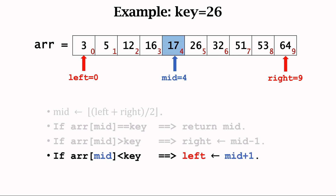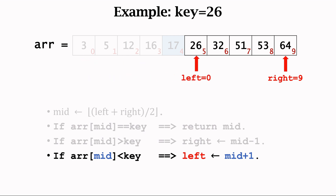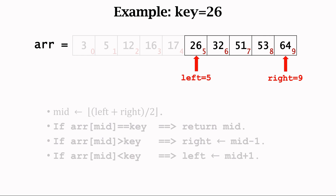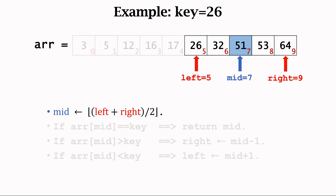Let's compare 17 and the key. The key is 26. The key is greater than 17, so the key 26 should be on the right side of mid. We will search for the key in the right half. Let the left pointer point to the position of mid plus 1. Now the left pointer is 5. We know the key is somewhere between the left pointer and the right pointer. Let's recompute mid — take the average of the left and right pointers. The average of 5 and 9 is 7, so let the mid pointer be 7. Mid is pointing to the seventh element, 51.